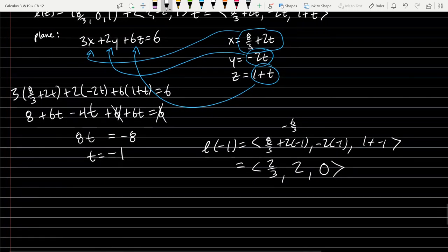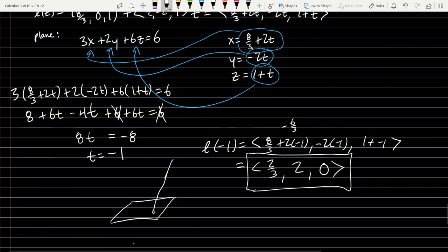And that will be the intersection right there. If you want a visual for this, here is your plane, the line, and we cut through. All we had to do was find the t value where it intersects.